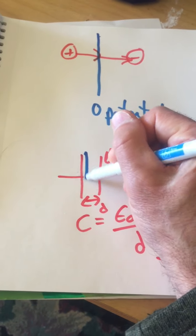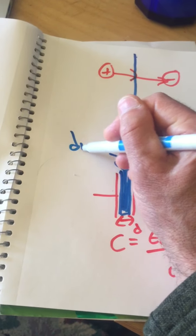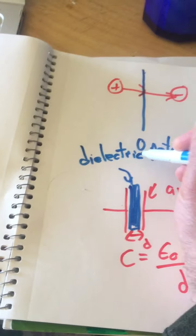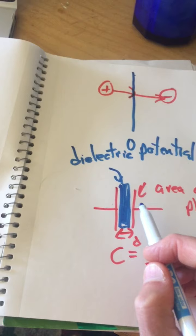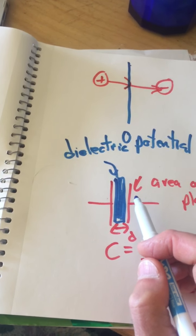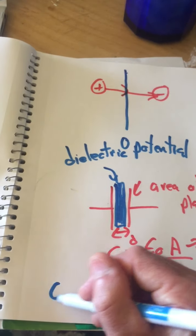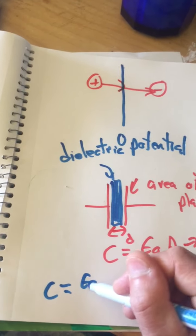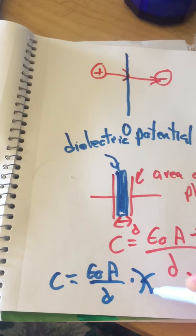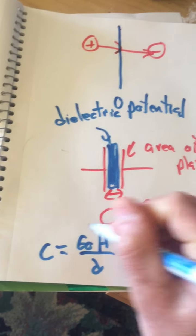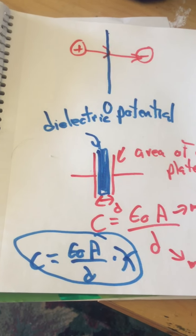Sometimes we have a dielectric between the plates. The dielectric is a material whose molecules align themselves with the electric field, which results in a larger capacitance. With a dielectric, the capacitance is the same equation multiplied by the dielectric constant. We did something like this in lab, where we measured dielectric constants based on the capacitance measured when putting a material between two plates.